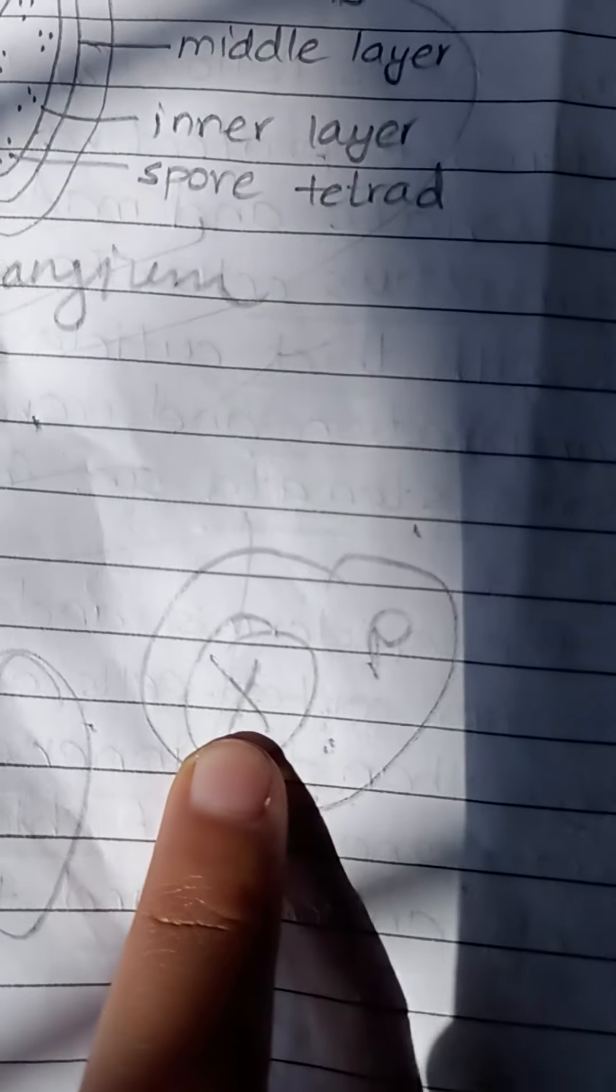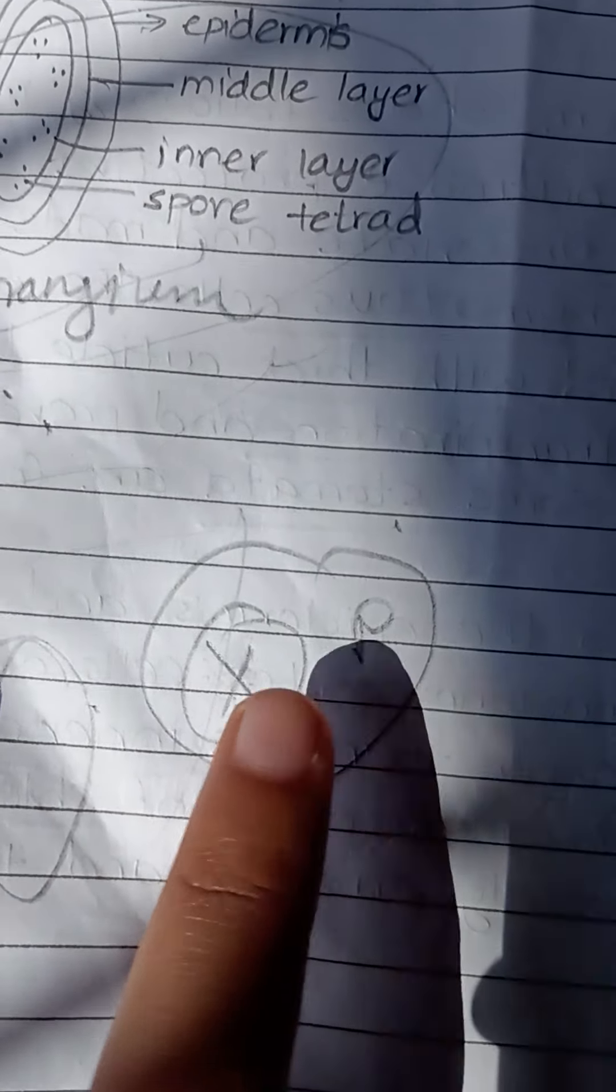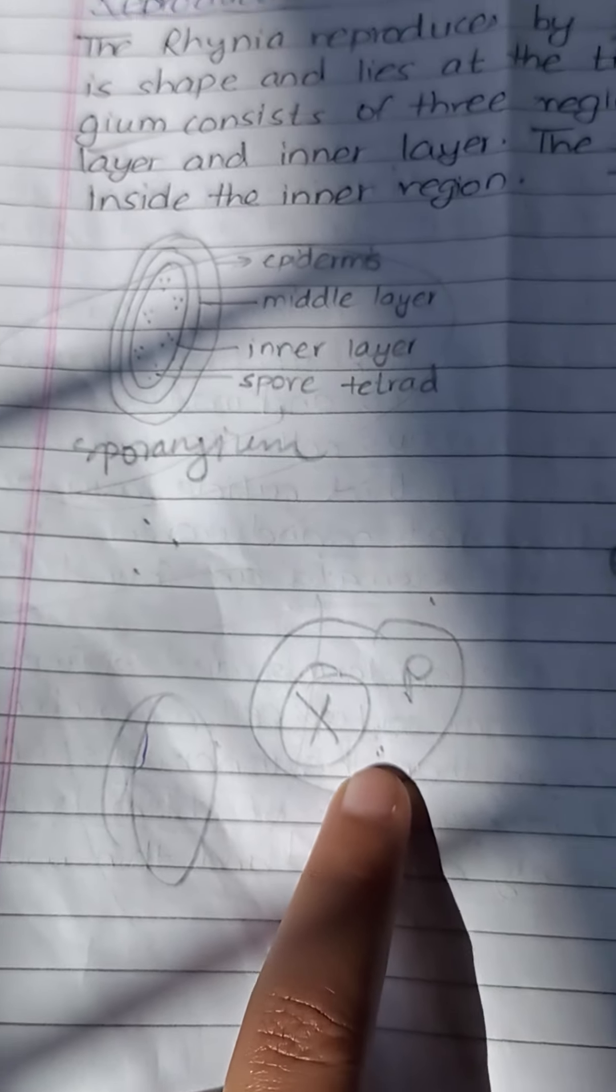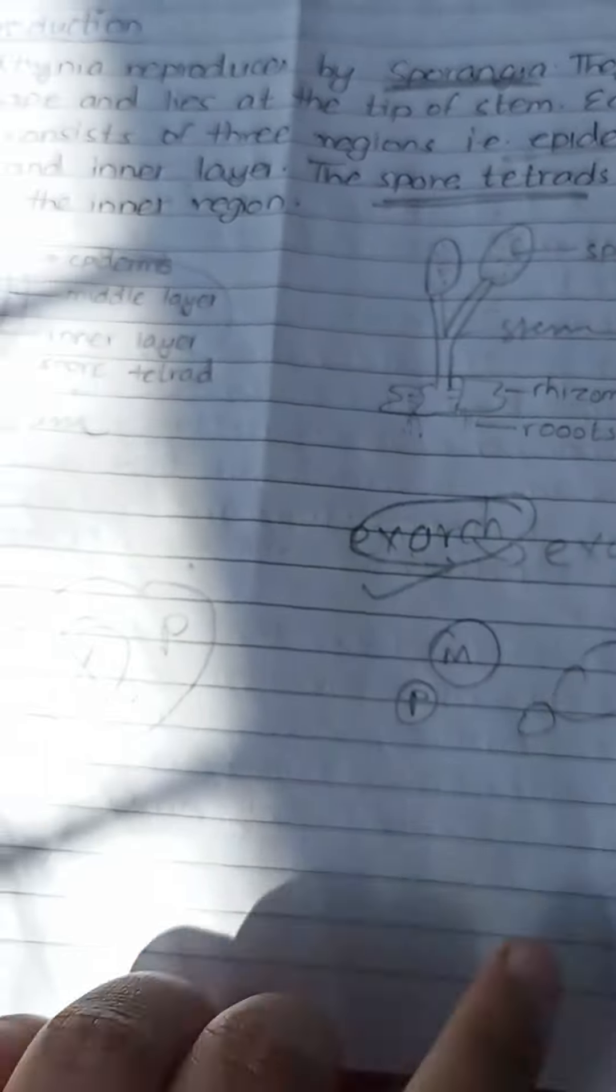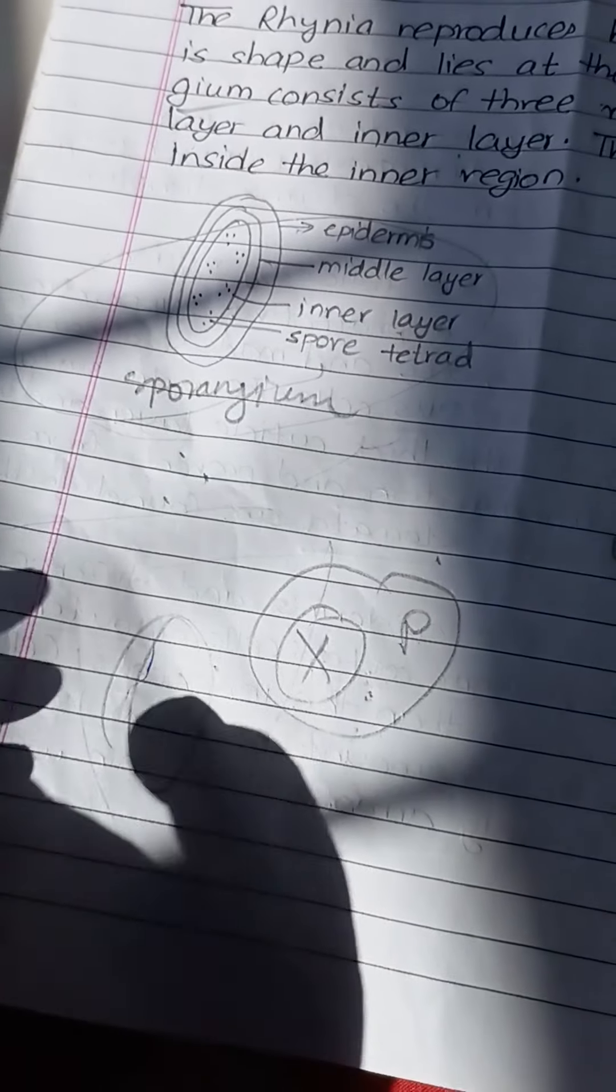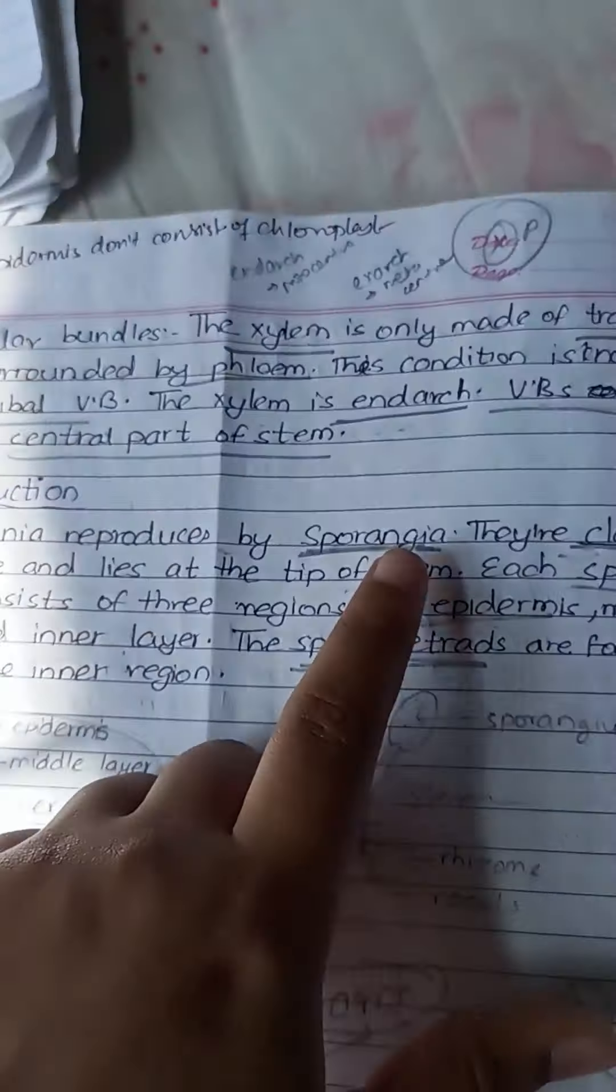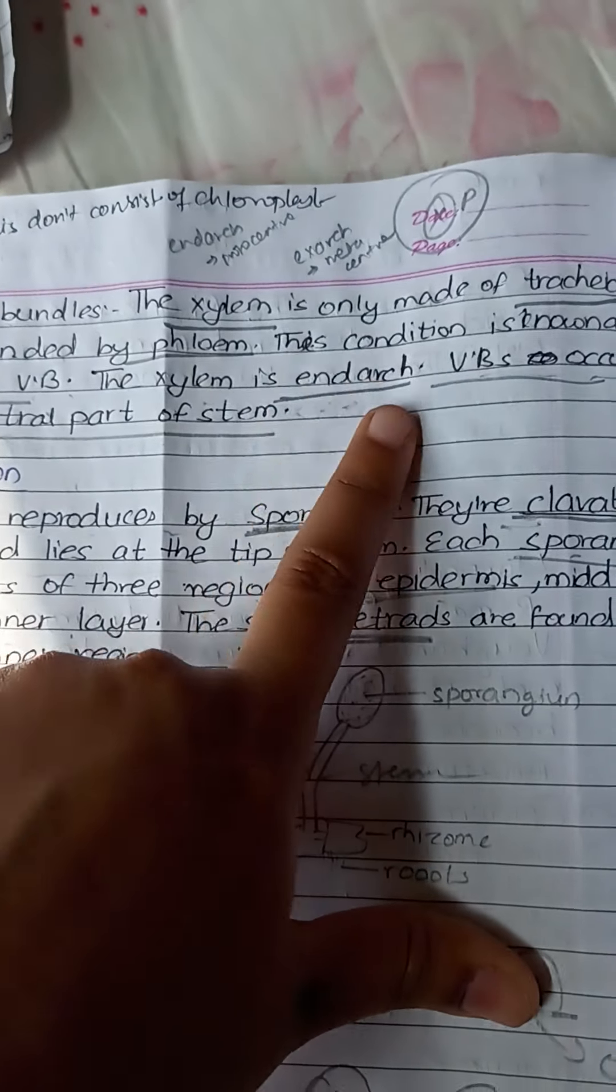Hadron, so it's called hadrocentric or amphicribral vascular bundle. Then xylem will be exarch vascular bundle. Then xylem, so it's called exarch vascular bundle. And xylem is exarch.